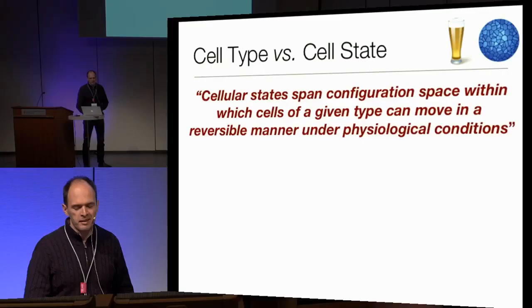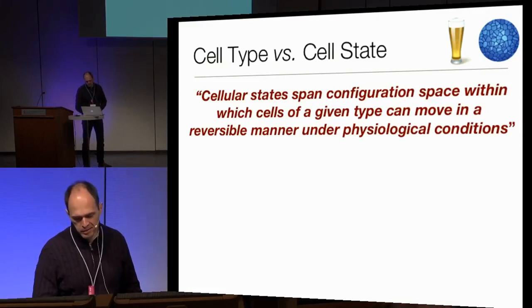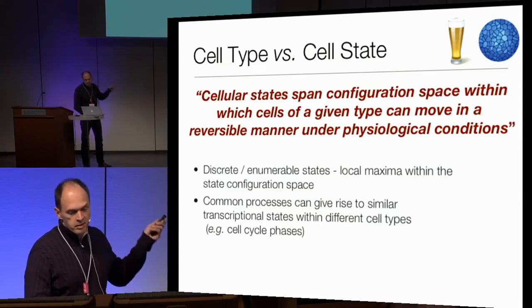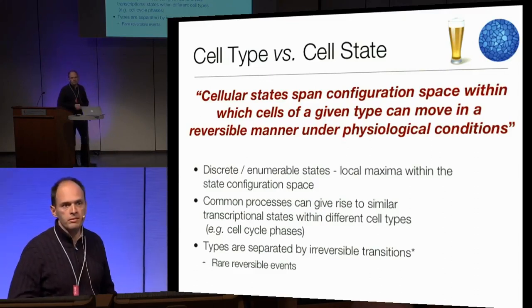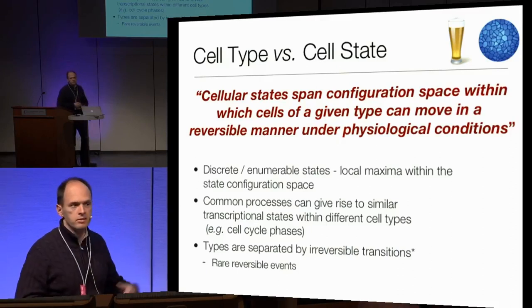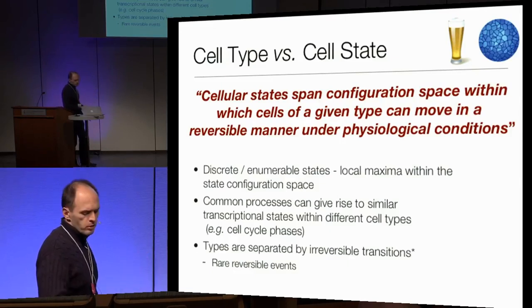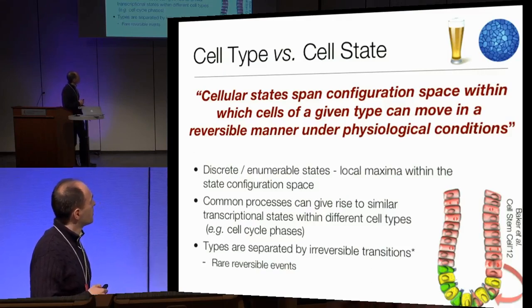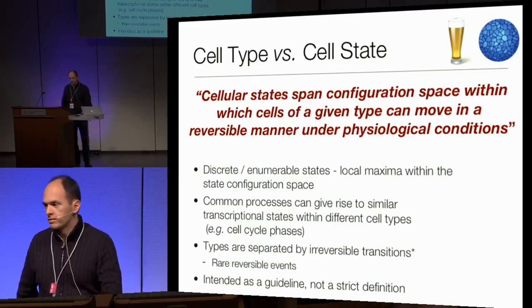The cell type versus cell state distinction is, I think, a lighthearted beer conversation rather than a war between biologists. A particular definition I tried to come up with has to do with reversibility of transcriptional change under physiological conditions: as long as the cell can go back and forth, we can think of it as a state as opposed to a type. None of this is universal — there will be important exceptions. Ideally, as Amos pointed out, you'd try to predict the potential futures of the cell and classify it based on that, but for now, maybe we can agree on more terminology and guidelines rather than strict definitions.